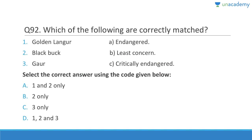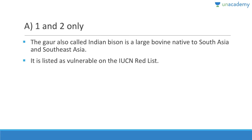Question 92: Golden langur is endangered — correct. Blackbuck is least concern. Gaur is listed as vulnerable, not critically endangered — so that match is wrong. Answer is one and two. Gaur is also called Indian bison.